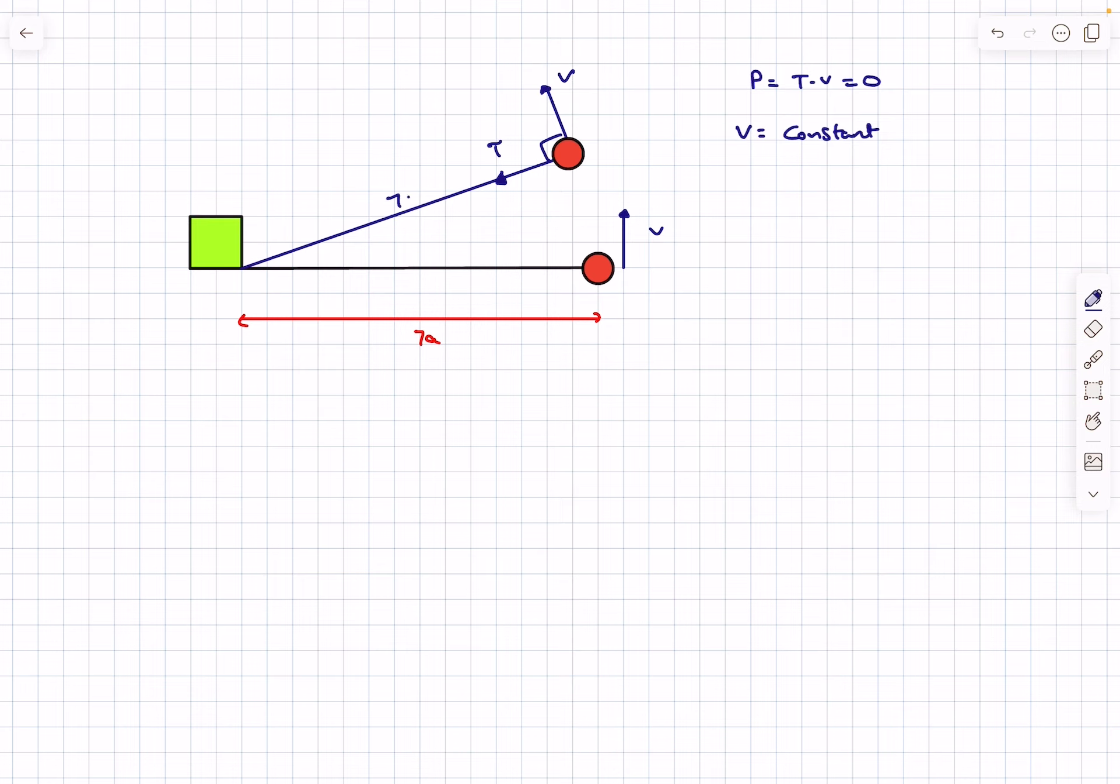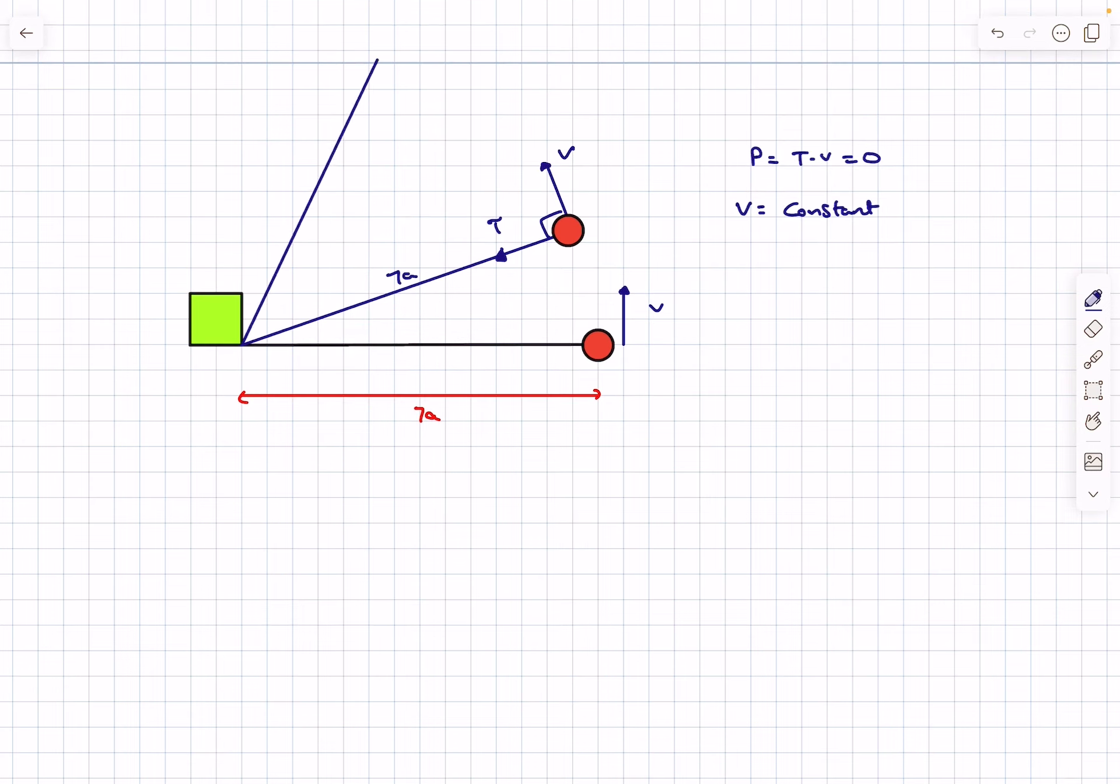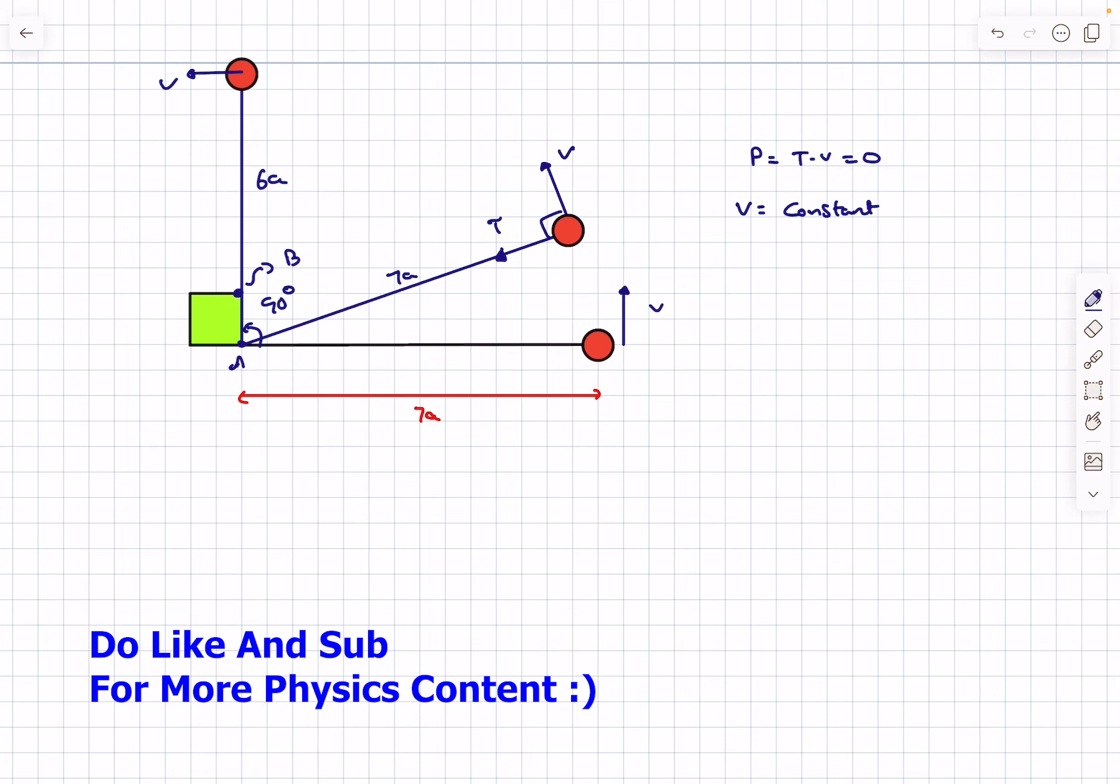At the start, the radius of the circular path is 7a. The mass rotates in this circle for 90 degrees. When the angle becomes 90 degrees, let's call the original point A and this point B. Now B becomes the new hinge, and the mass rotates in a circle of radius 6a.